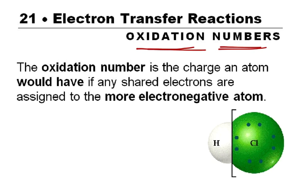When we did it before, we did it by a set of rules, but now we have a concept: the oxidation number is the charge that an atom would have if any shared electrons are assigned to the more electronegative atom.